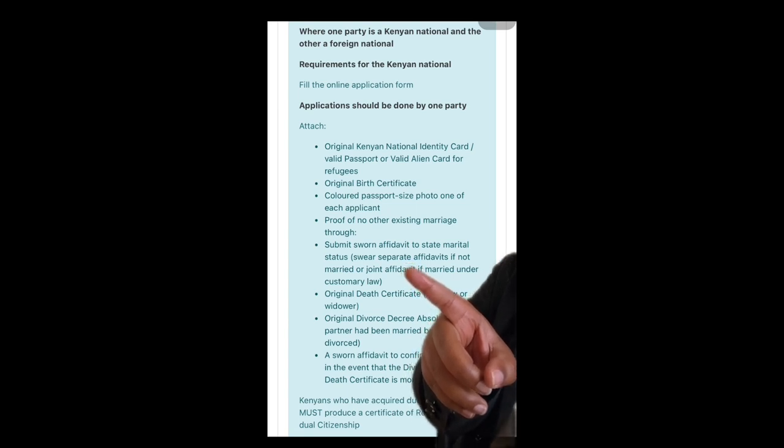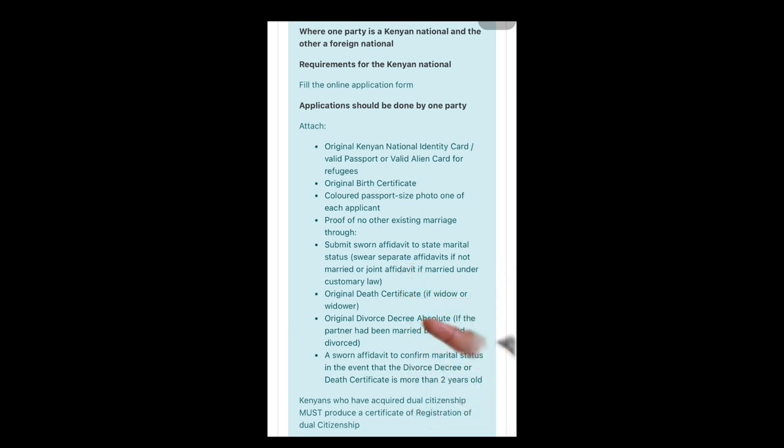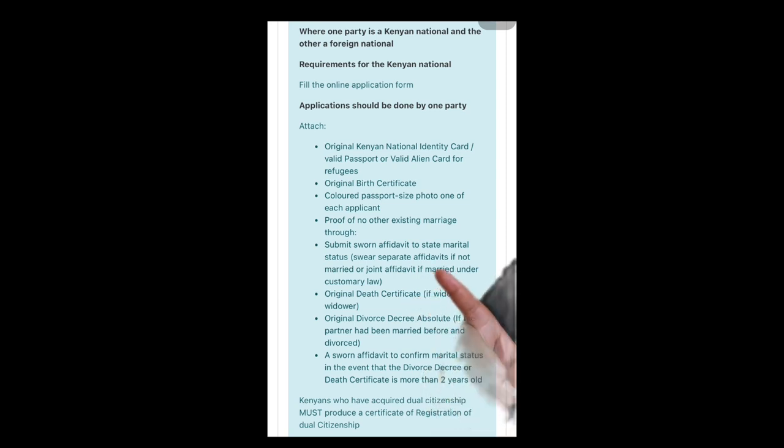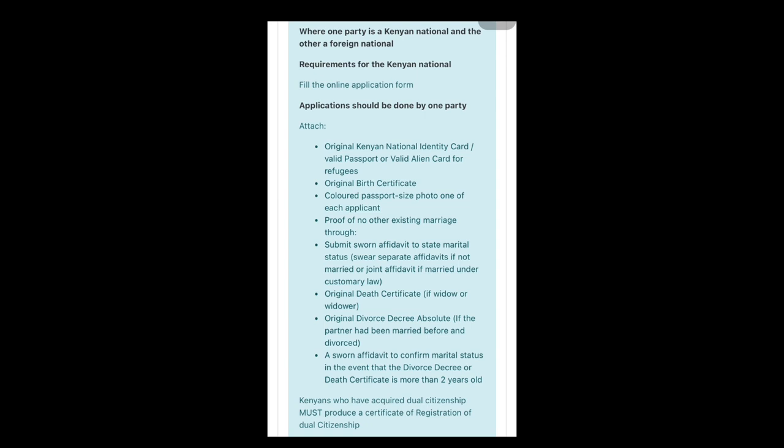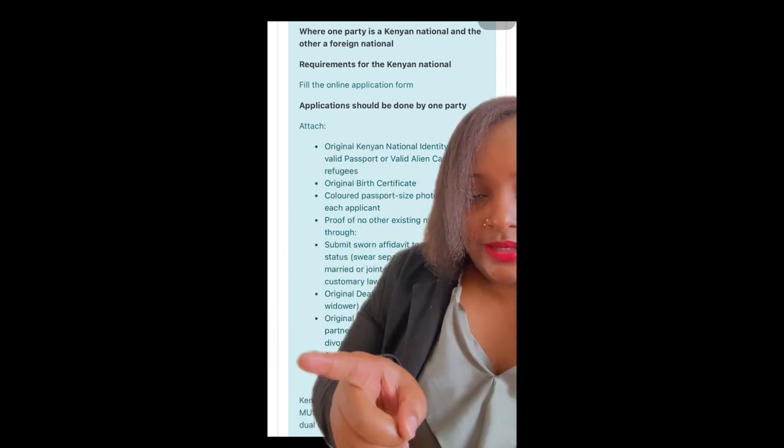You'll also need proof of no other existing marriage by submitting a sworn affidavit, and your original death certificate of your spouse if you're a widow, or a decree of divorce if you're divorced, along with a sworn affidavit to confirm marital status — confirming you've been divorced or your spouse deceased for two years. Kenyans who have dual citizenship must produce proof of their dual citizenship.